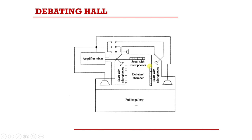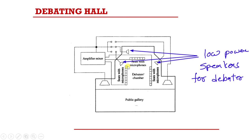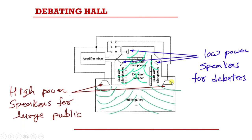In a debating hall, each debater's seat has a microphone. When debaters are speaking they can listen to each other through low-power speakers. There is also a public gallery which can listen to the sound through high-power speakers. This arrangement serves both the debaters and the public gallery audience.